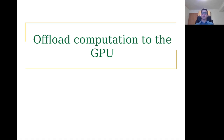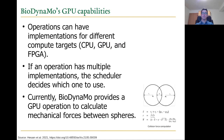BioDynamo also has experimental support to offload computation to the GPU. Operations can have implementations for different compute targets — CPU, GPU, or FPGA — and BioDynamo's scheduler decides which to use. Currently we provide an experimental GPU operation to calculate mechanical forces between spheres, a costly operation for tissue models. For more information, see the paper from Ahmad Hesa.